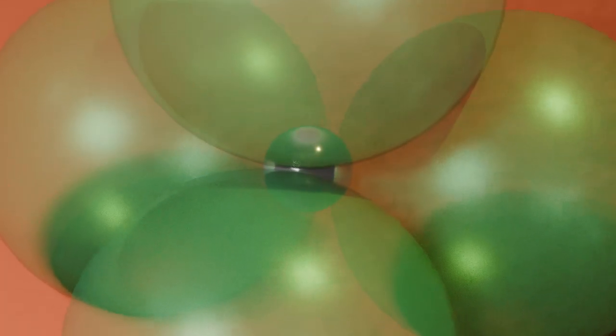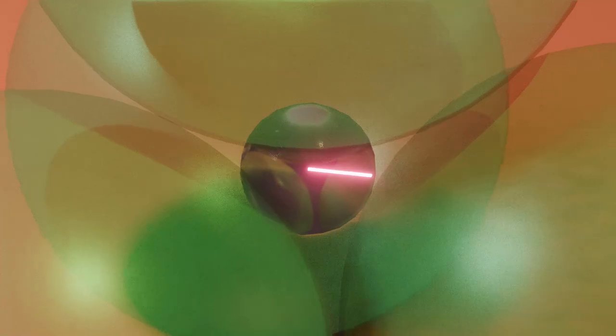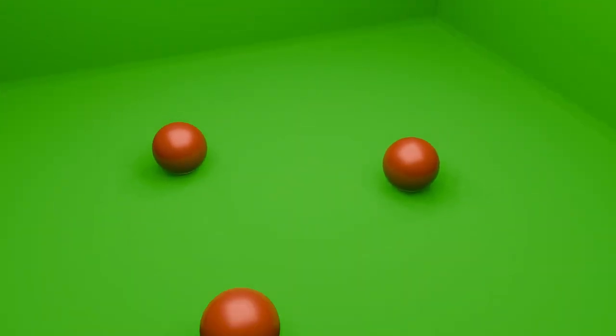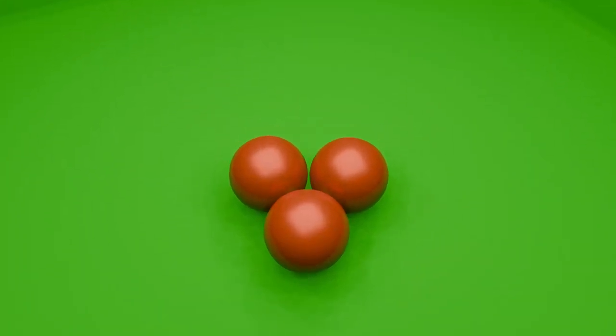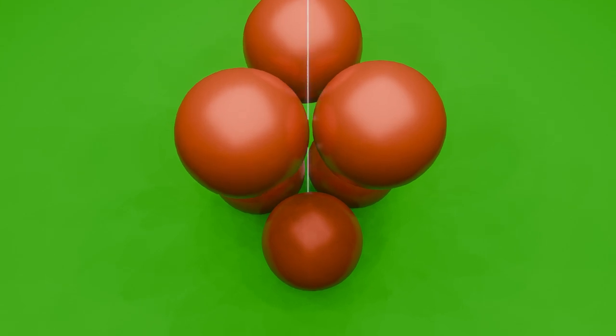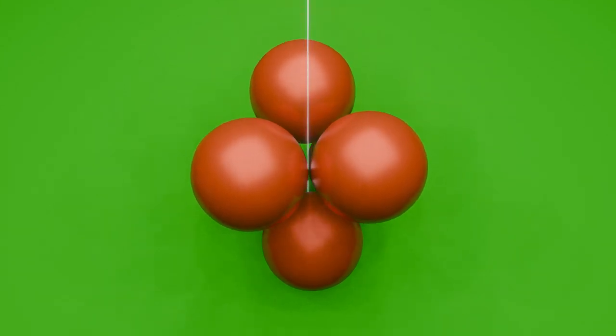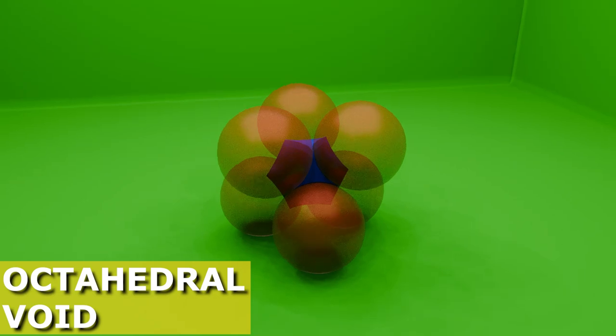The size of a void is defined by the radius of the largest sphere that can fit inside it. When three closely packed spheres lie above three other closely packed spheres with their centers aligned together, an octahedral void is formed between these six spheres.